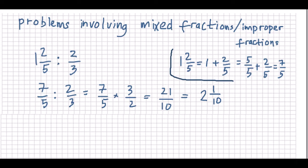When dealing with mixed fractions, sometimes it is better to rewrite the mixed fraction as an improper fraction. For example, 1 and 2 over 5 divided by 2 over 3: first we rewrite the mixed fraction — 1 and 2 over 5 equals 5 over 5 plus 2 over 5, which is 7 over 5. Now 7 over 5 divided by 2 over 3 is the same as 7 over 5 multiplied by 3 over 2, giving a result of 21 over 10, or as a mixed fraction, 2 and 1 over 10.